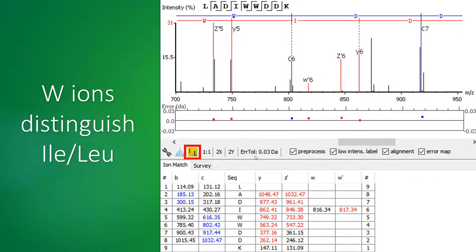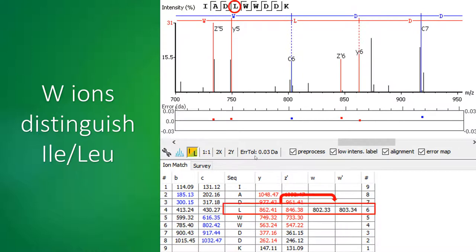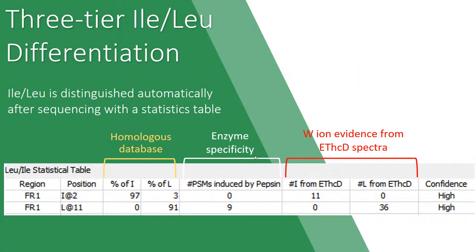Did you notice that there is an IL button below the MS2 spectrum? By clicking it, the IL residues are changed to the opposite in the sequence and the table, and it recalculates the W ion m/z values using the opposite assignment. Now we do not see any peak that supports L. In PICS-AB 2.0, after the protein sequence is constructed, the IL assignments are automatically made considering W ion evidence from ETHCD spectra, enzyme specificity, and homolog database information. This IL statistical table is provided in the result.